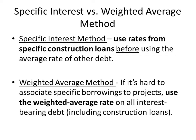A specific interest method: you figure out your average accumulated expenses — how much did I spend? Then you say, what's the interest rate in effect? If you have a construction loan specifically for that project, just look at what the interest rate is for that project — that's your specific interest method. Beyond that, if you have more debt than is allocated to that loan, you have to take the weighted average rate of all of your other outstanding loans.